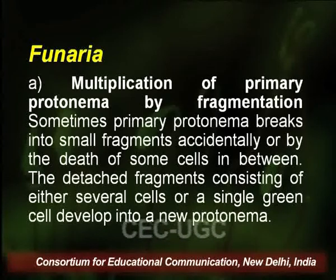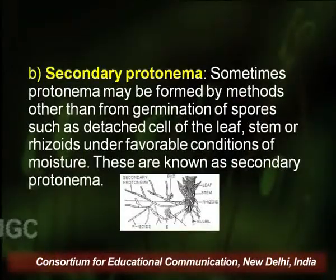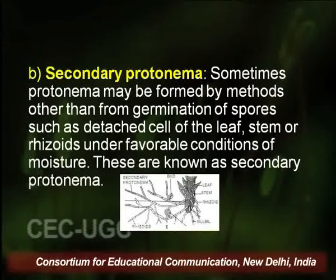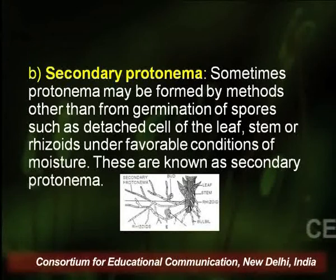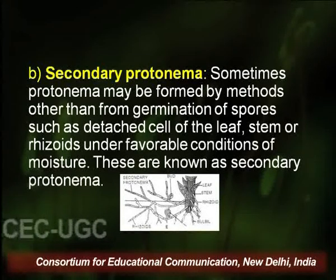Fragmentation occurs by death of some cells; detached fragments consisting of either several cells or even a single green cell develop into a new protonema. Secondary protonema may also be formed by methods other than spore germination, such as from detached cells of the leaf, stem, or rhizoids under favorable moisture conditions.